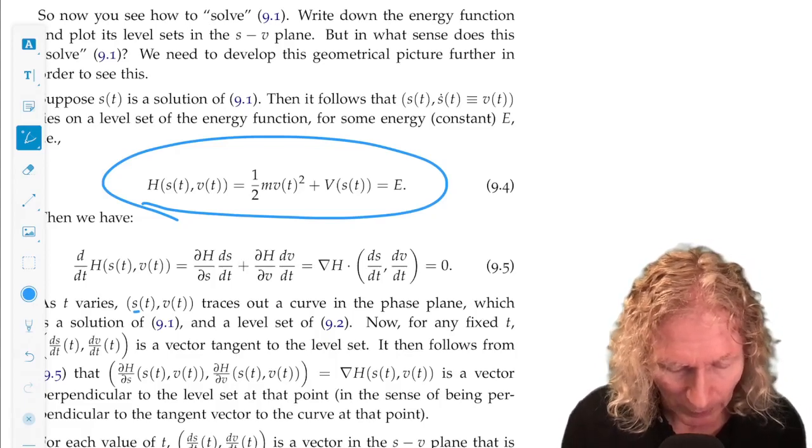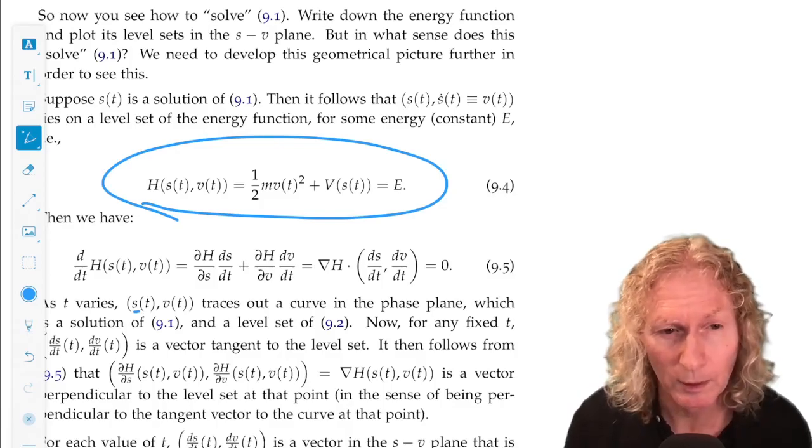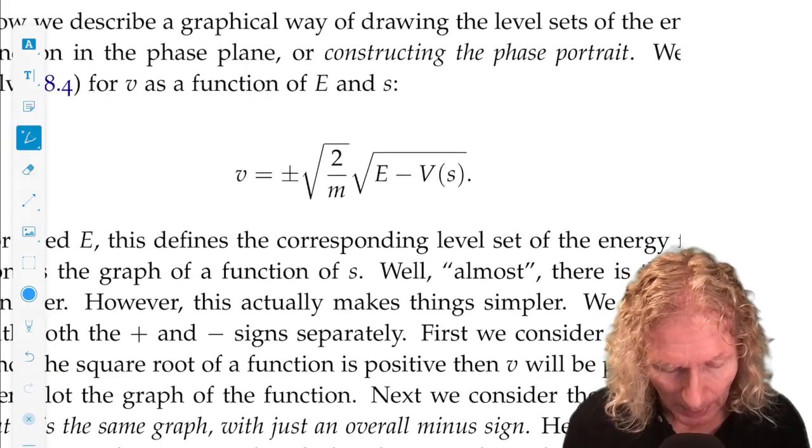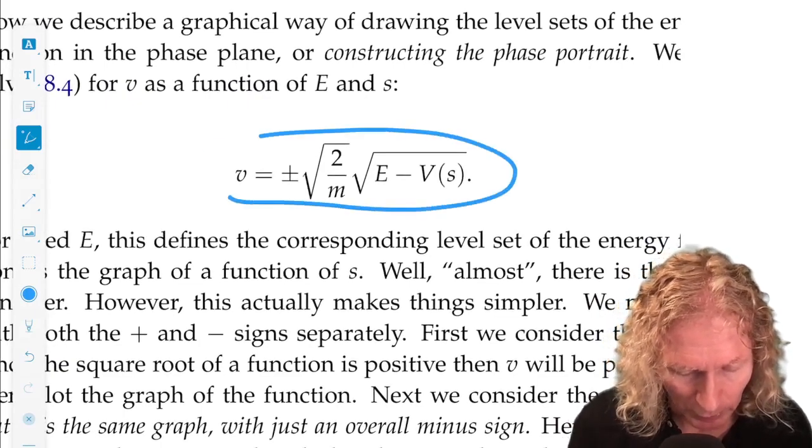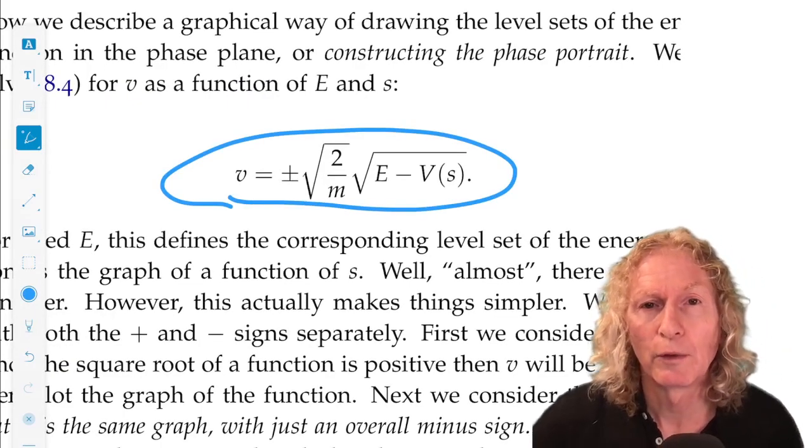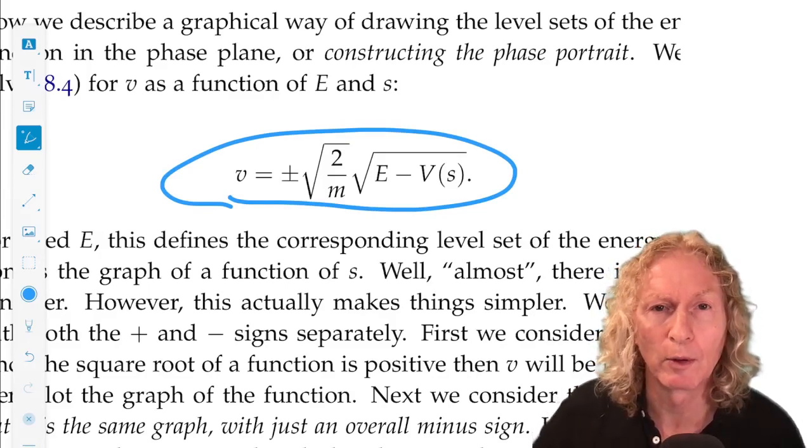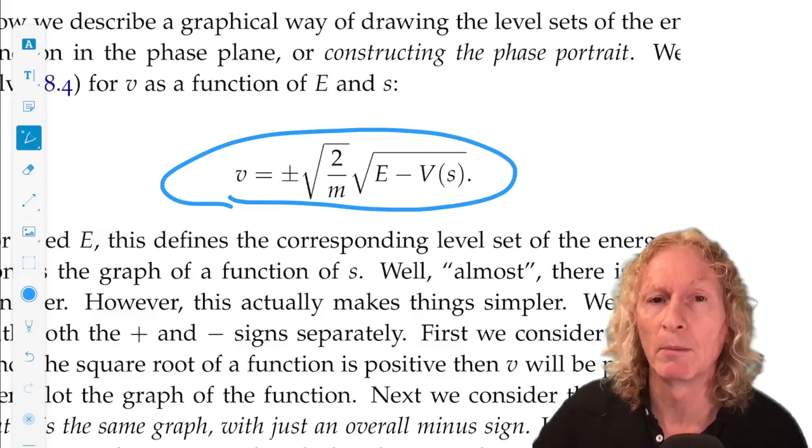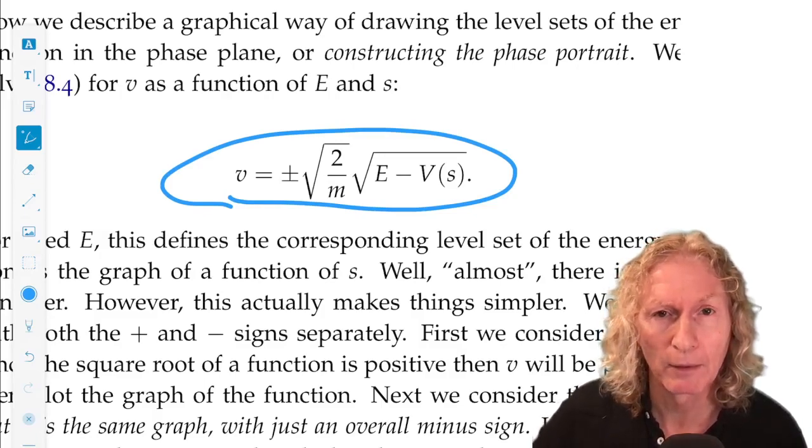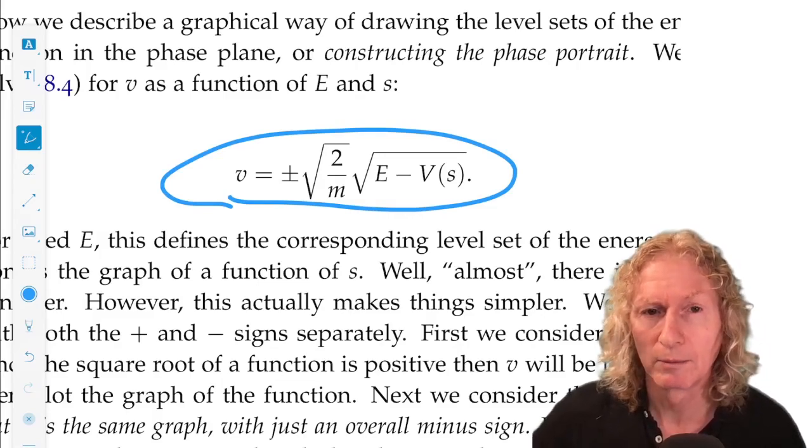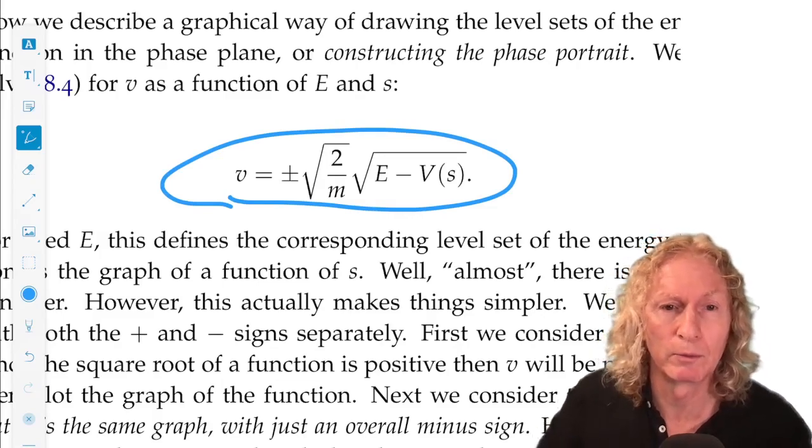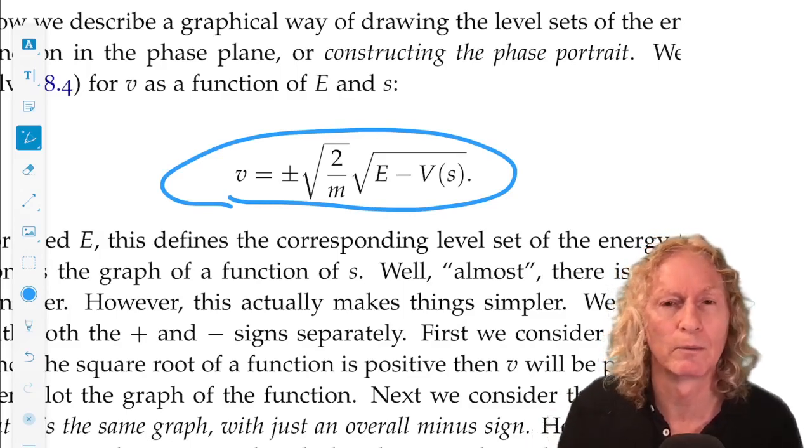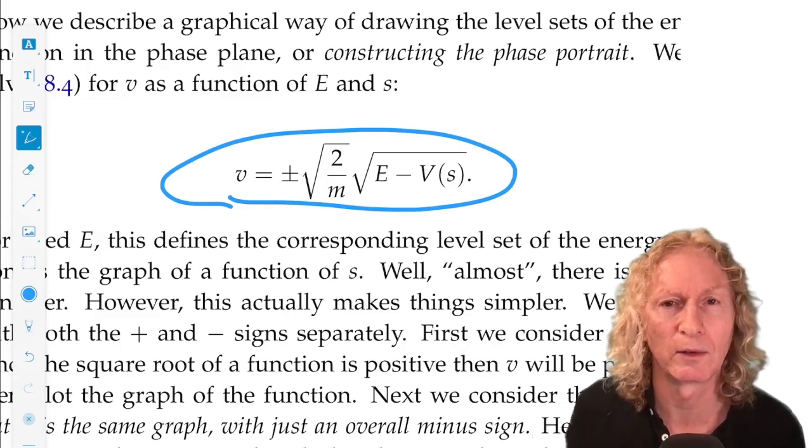Well, we can solve this for v. This is quadratic in v, we can solve for v and we just get this expression here. So v is a graph over the s variable. It has two branches, plus and minus. One for v positive, the upper half of the phase plane, the other for v negative. And these are symmetric. The one we construct in the upper half can be just reflected across the horizontal axis, the s axis.